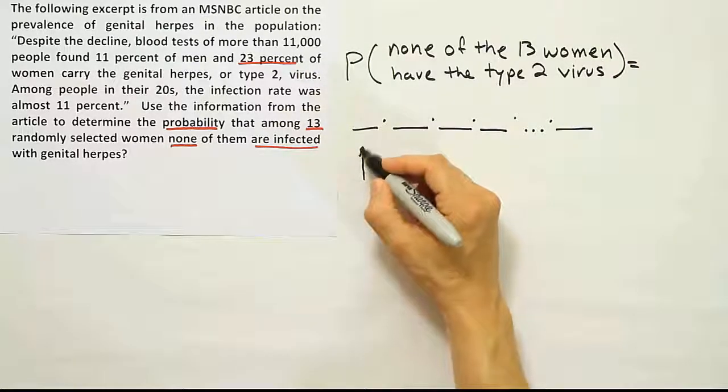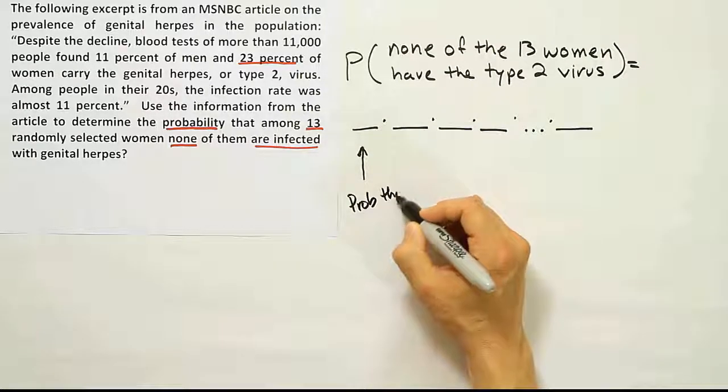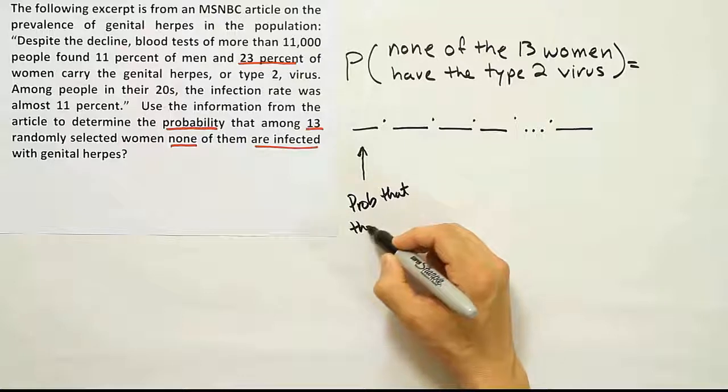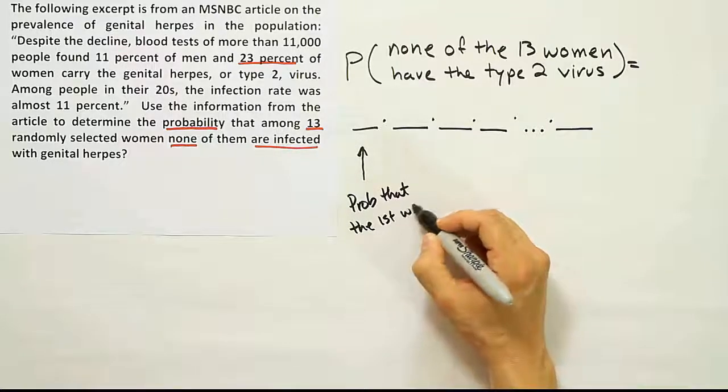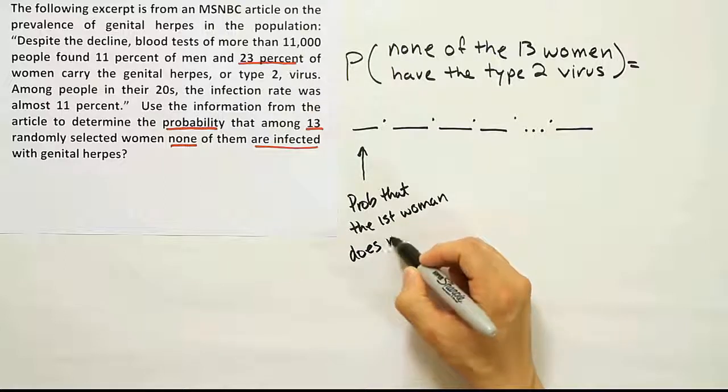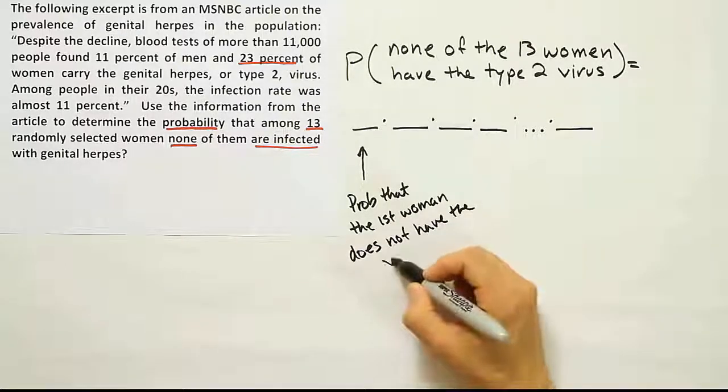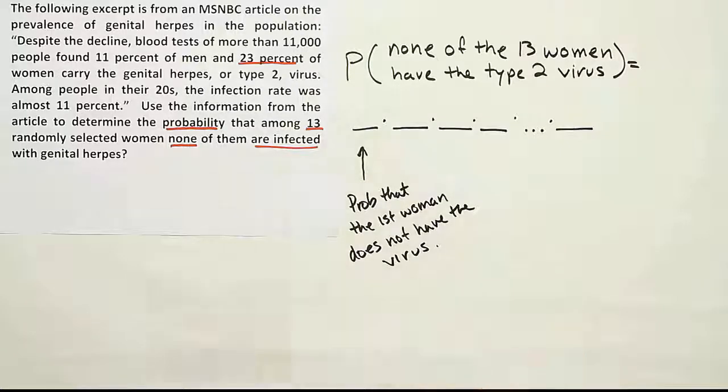What's that first space representing? Then what's the second space representing, etc. Well, I'm going to say this first state space is the probability that the first woman does not have the virus. Right, that's what we're looking for—the probability that the first woman does not have the virus.